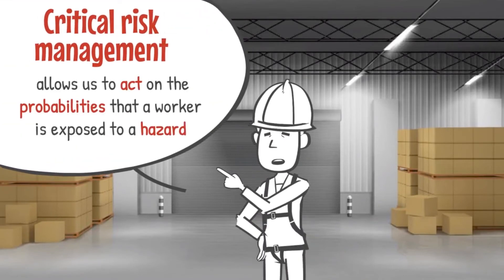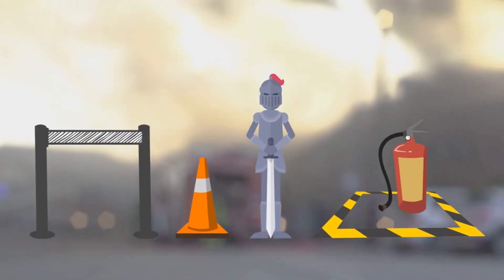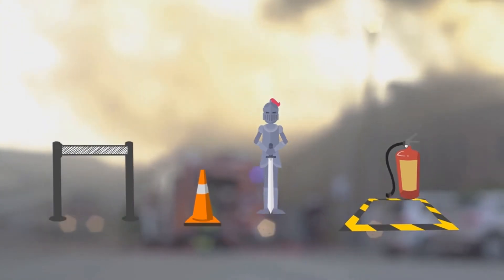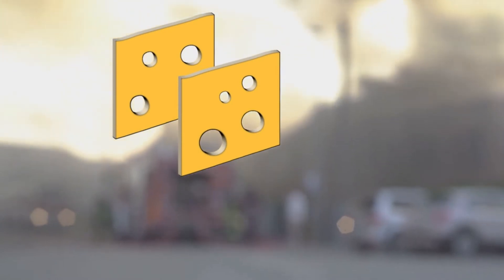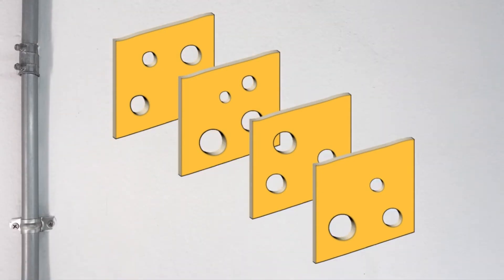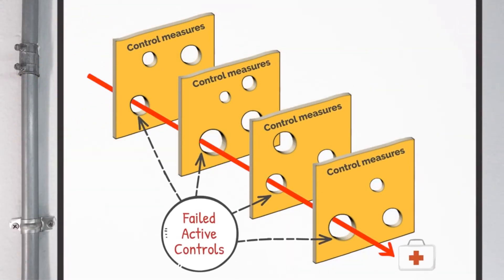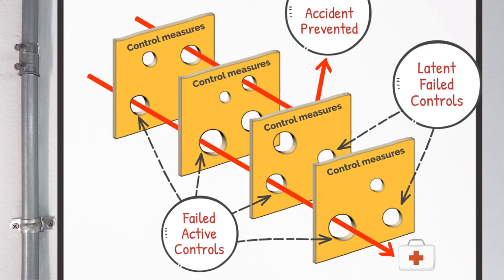Critical risk management therefore allows us to act on the probabilities that a worker is exposed to a hazard. To prevent accidents, different measures are implemented in companies. These different measures are never 100% efficient, and sometimes oversights and lack of diligence leave holes in these barriers, making it difficult to prevent accidents. When an accident occurs, all implemented measures have failed to prevent it. By examining the chain of events which led to the accident, it is possible to detect the measures that would have prevented the accident if they had been properly followed. This is what we call the reason model, named for its creator, or the Swiss cheese model.